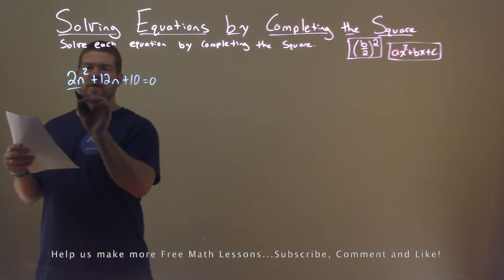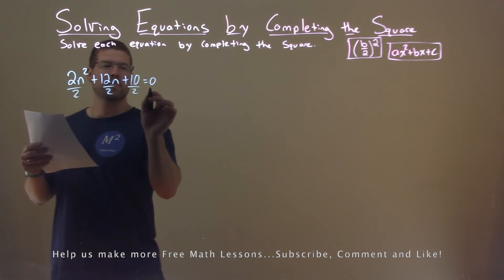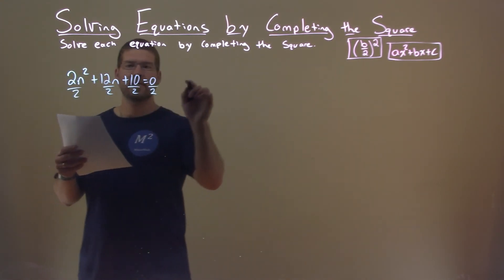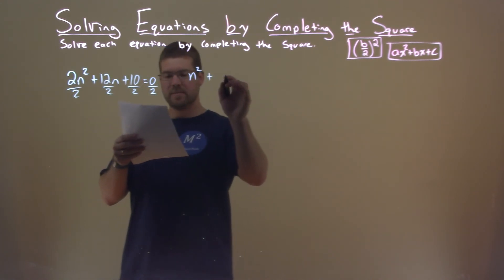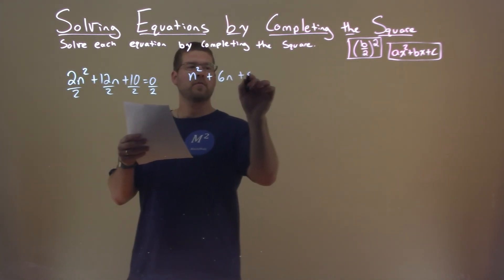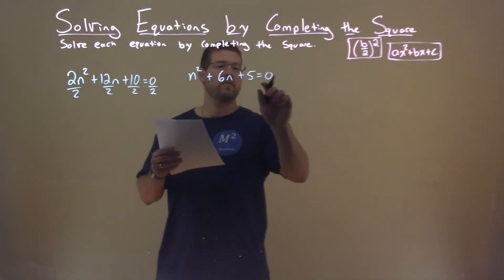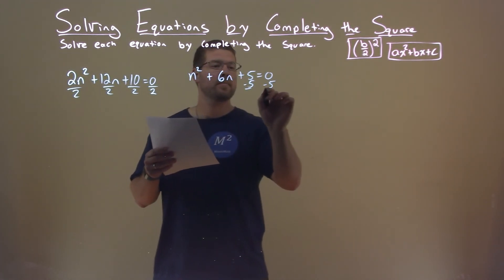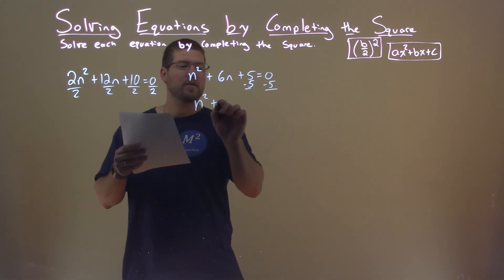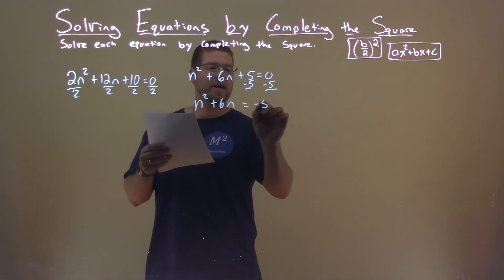First thing I'm going to do is actually divide all parts by 2. That leaves me with n squared plus 6n plus 5 equals 0. I'm now going to subtract 5 to both sides of the equation, and I have n squared plus 6n equals negative 5.